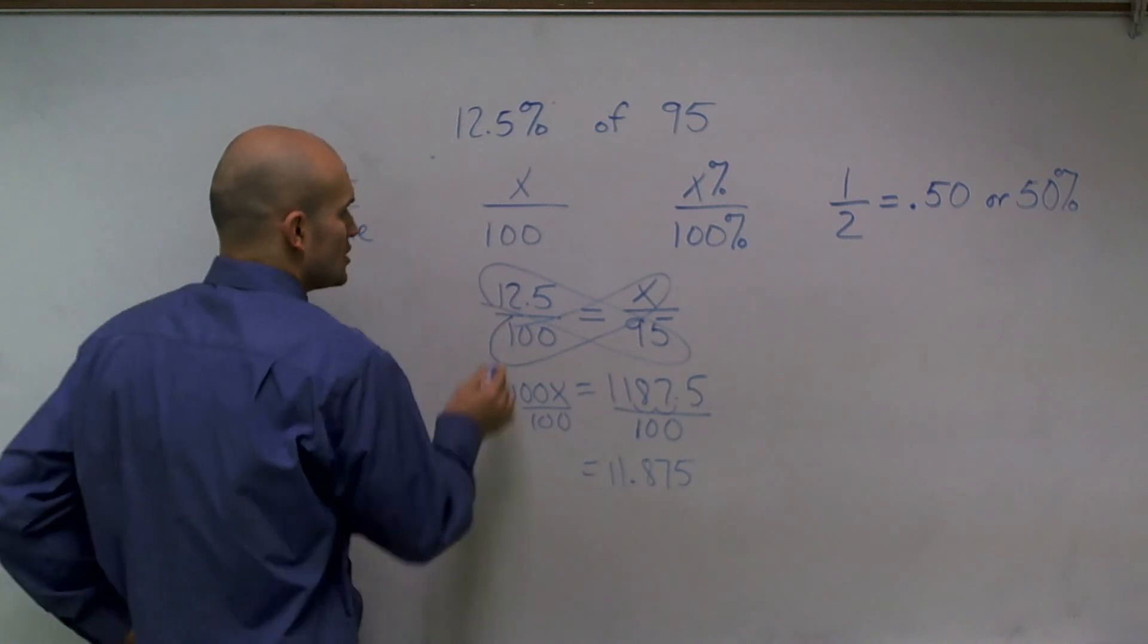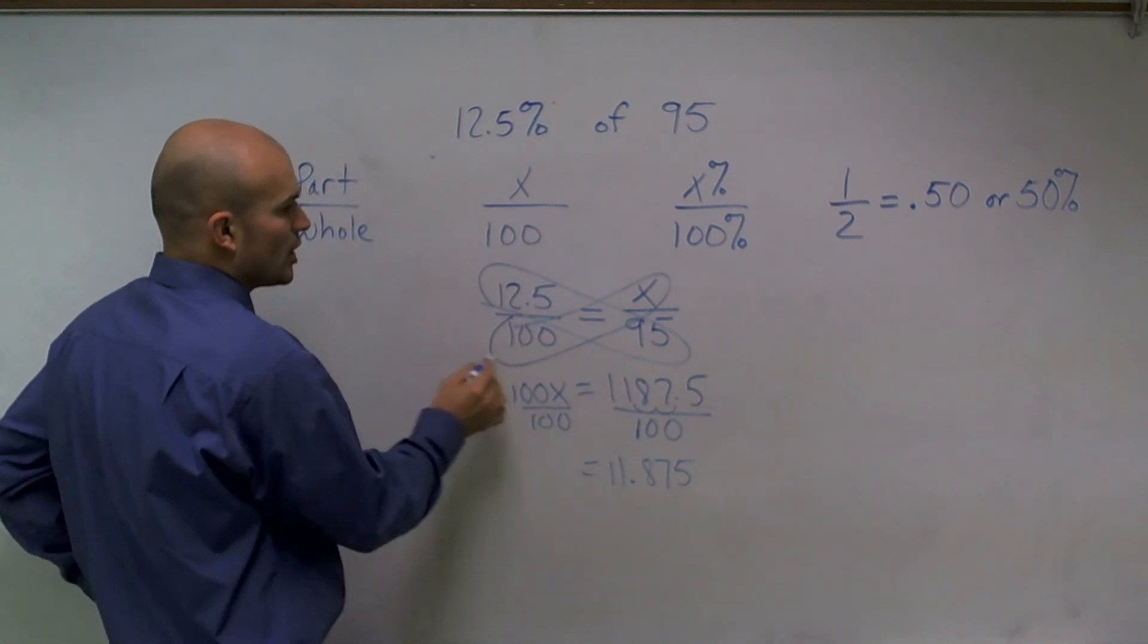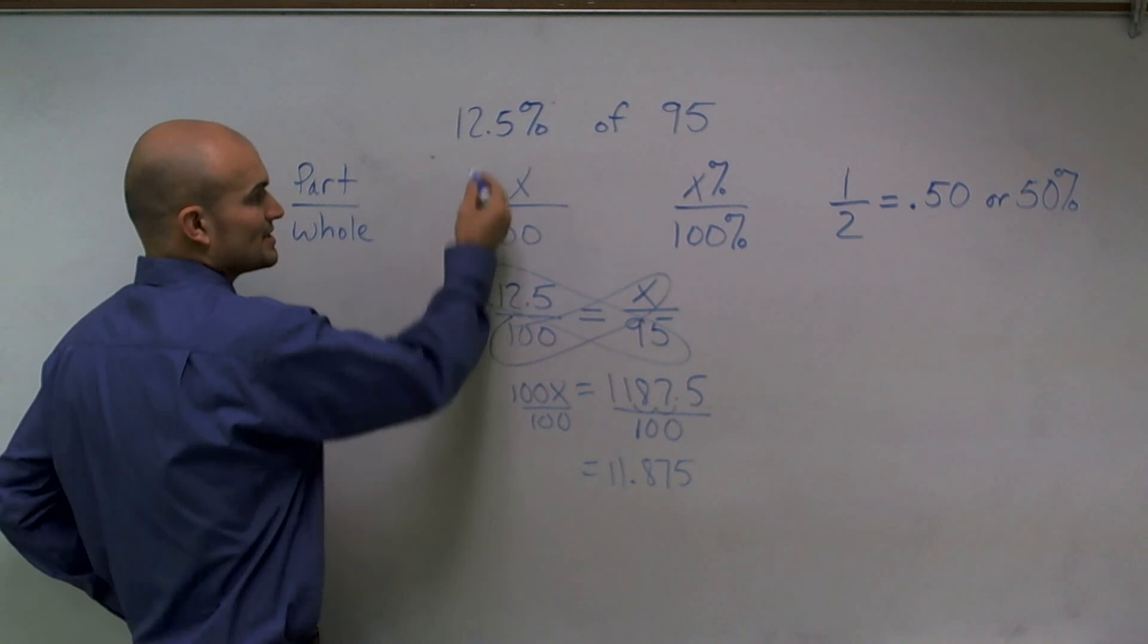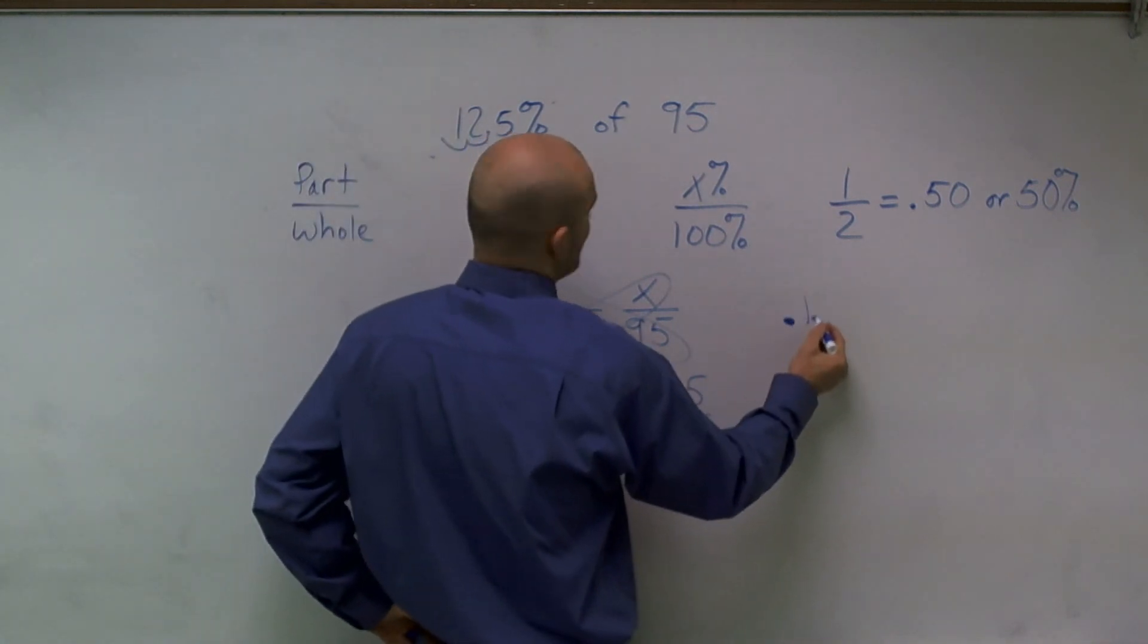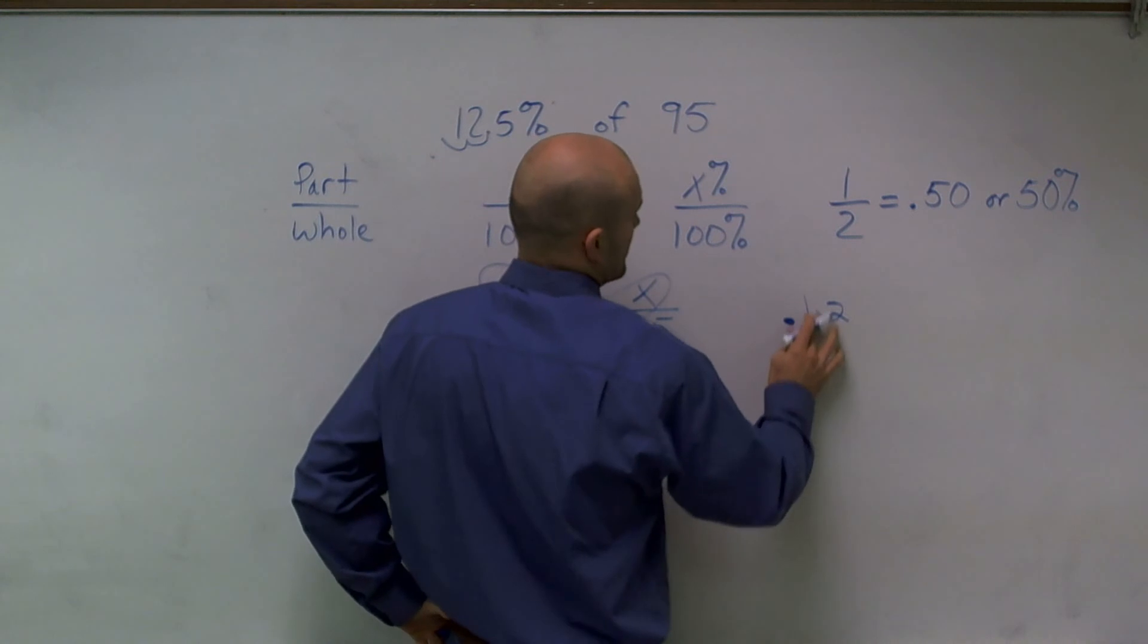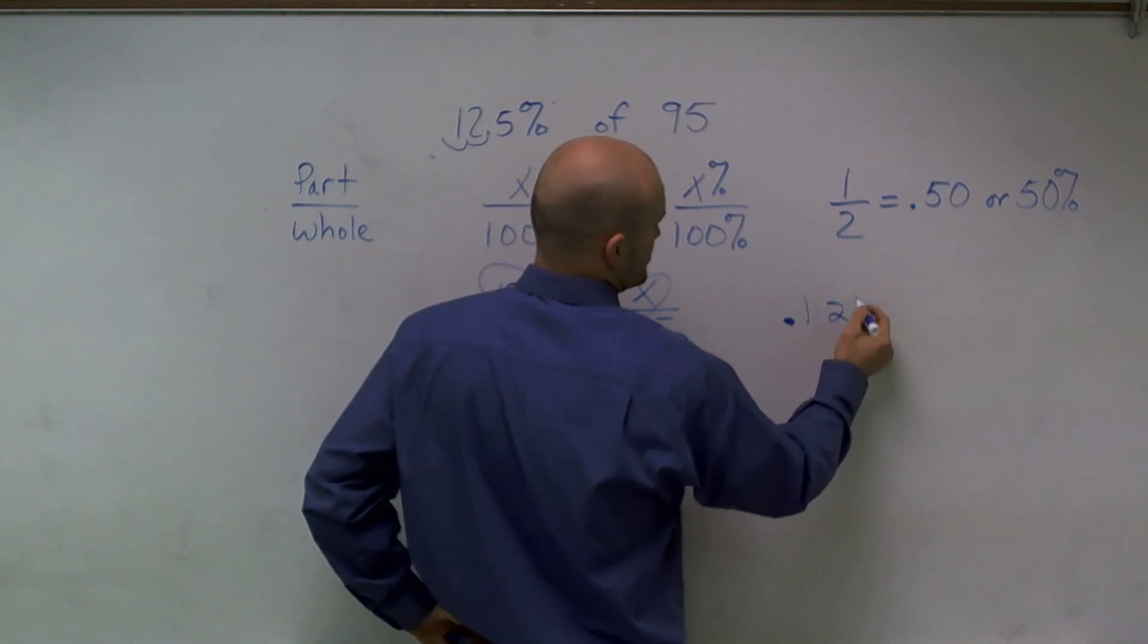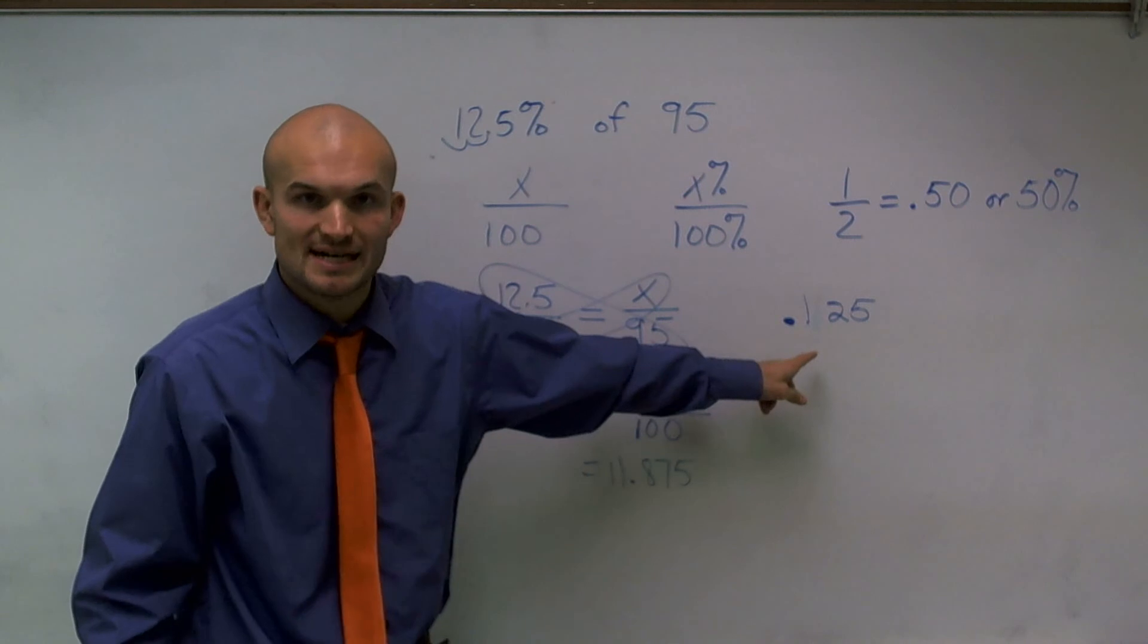I can write this as a decimal. So 12.5 divided by 100, remember, just move your decimal place over two points. So now I have a decimal, 0.125.